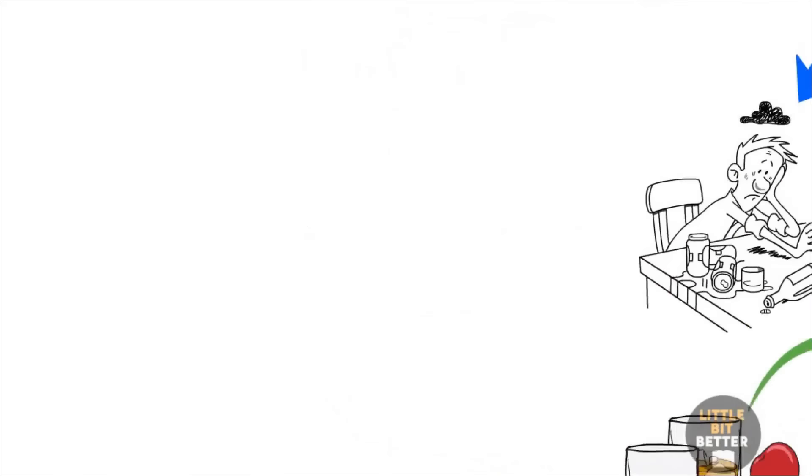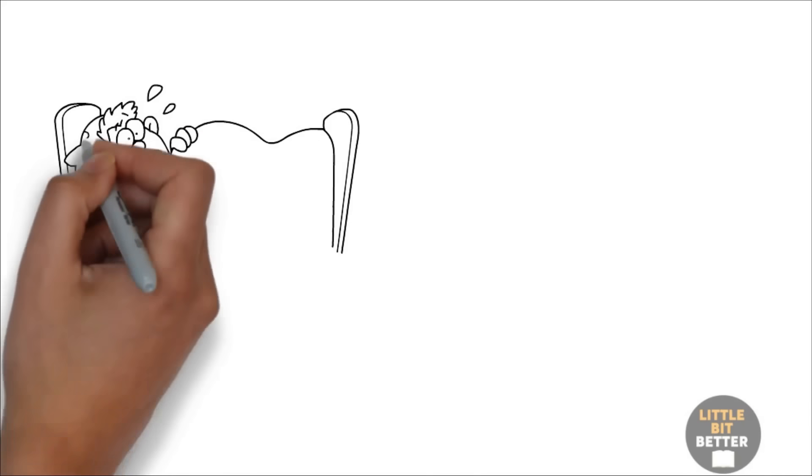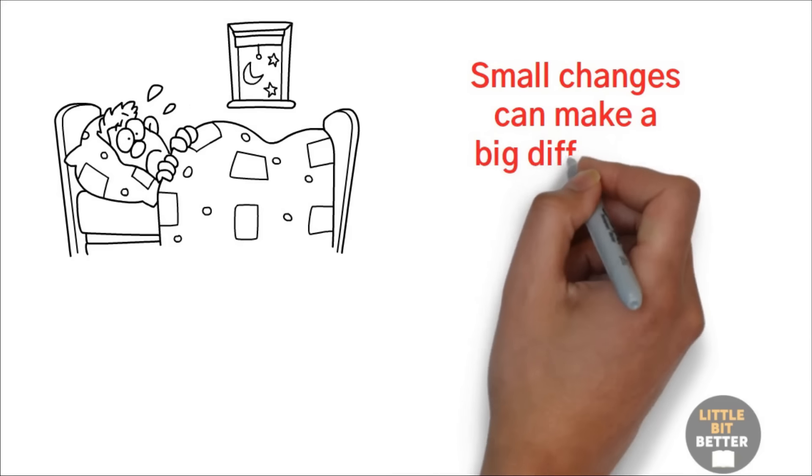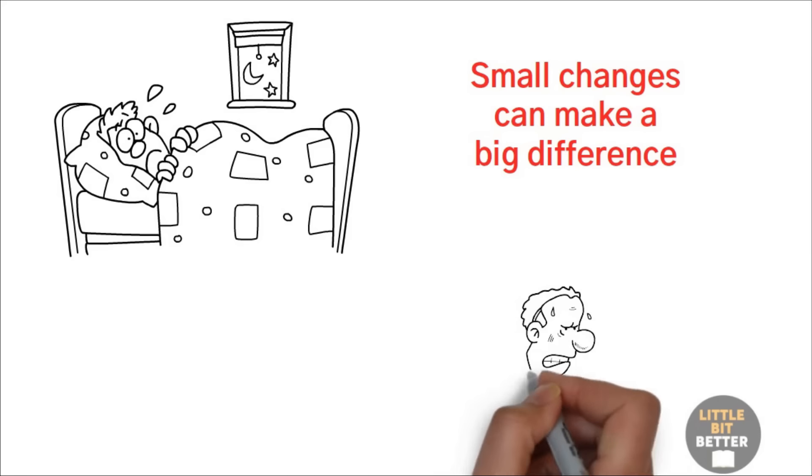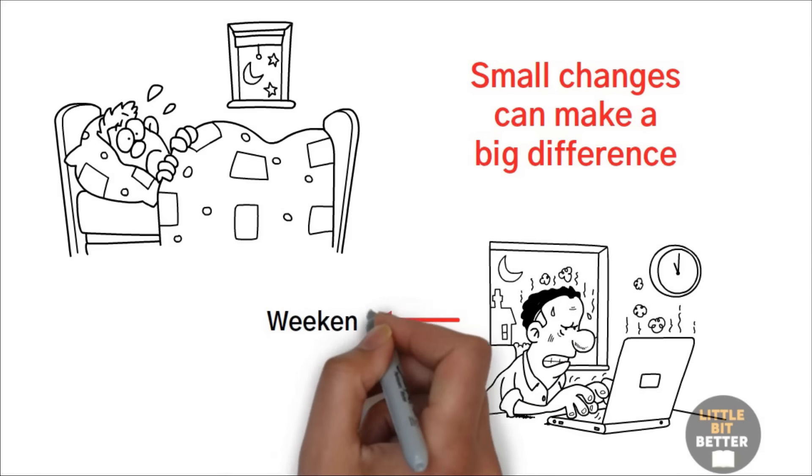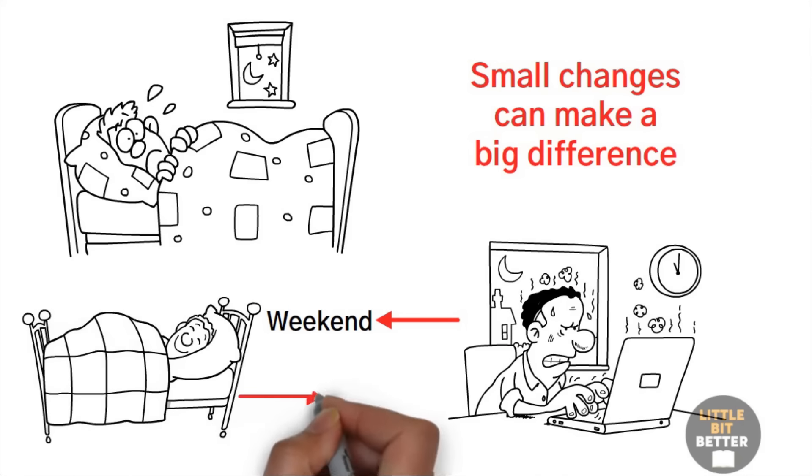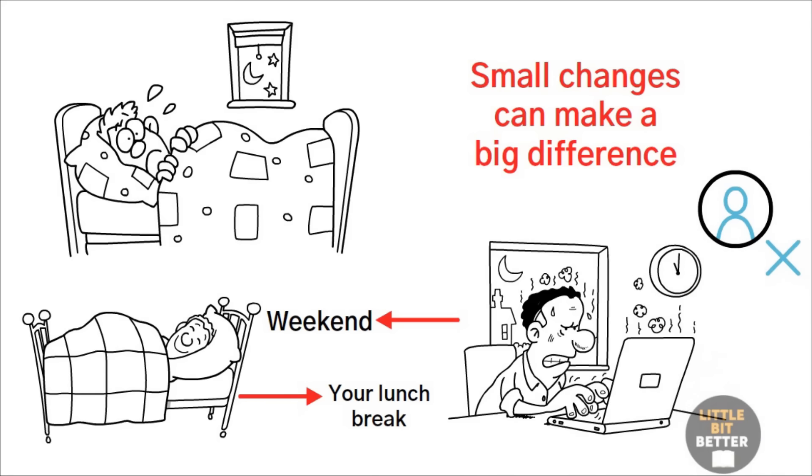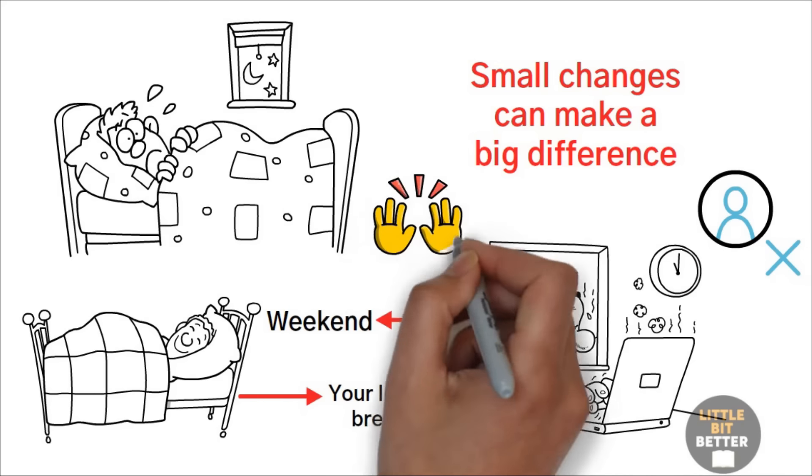Even if you can't get eight hours of uninterrupted sleep every night, small changes can make a big difference. For example, if you couldn't go to bed early, not even once during the week, try to catch up during the weekend, or try to take a short nap during your lunch break. Even though this is not ideal for your health, it'll partially help to replenish your willpower.